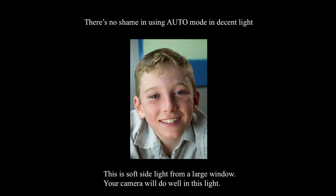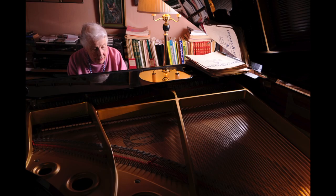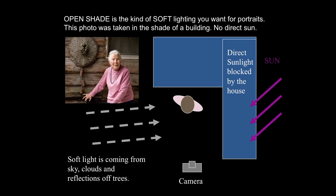There is no shame in using Auto mode if the light is very good. This is soft side light from a large window — your camera will do very well in this light. That's why it's so important for us to learn how to recognize when the light is good, because that would free us to go back to Auto or choose the appropriate mode to adapt to soft or hard light. Open shade is the kind of soft light you want for portraits. This photo was taken in the shade of a building with no direct sun. The model, Velzo Brown, who was a working jazz musician until age 101, is standing in front of her log cabin house, and the sun is on the other side — the direct sunlight is blocked by the house, so she's being lit by open shade.